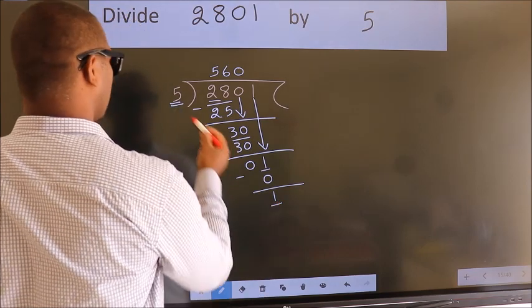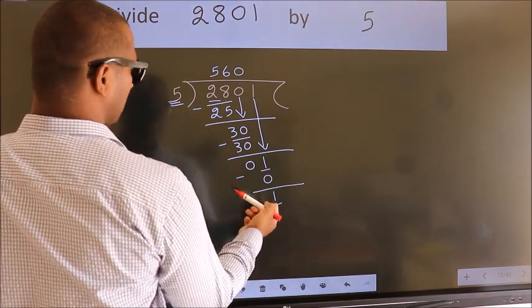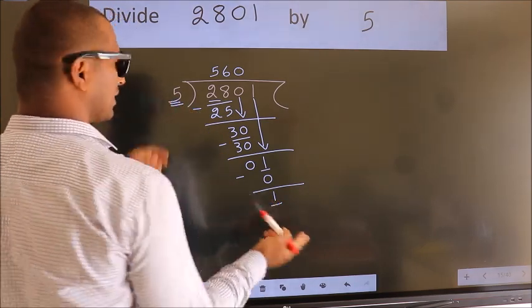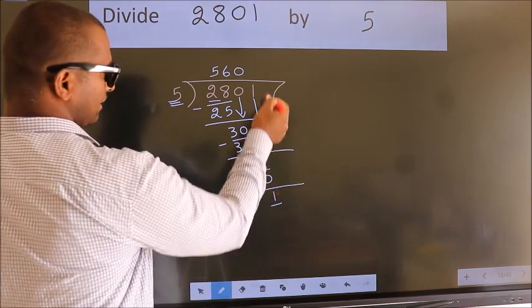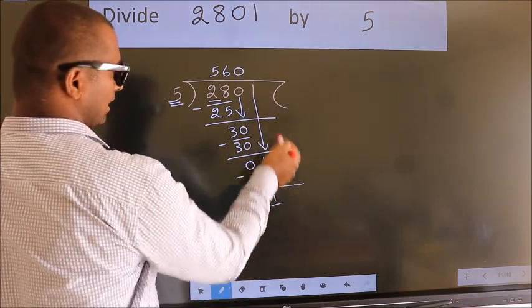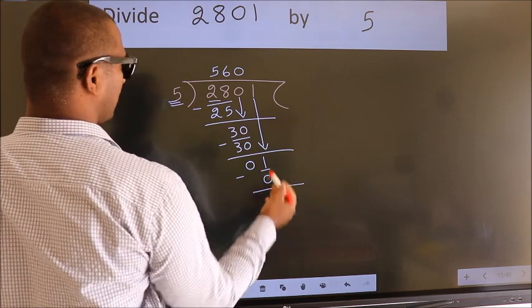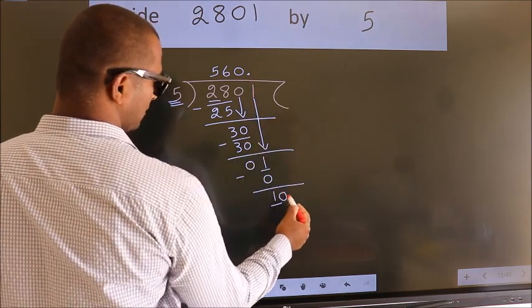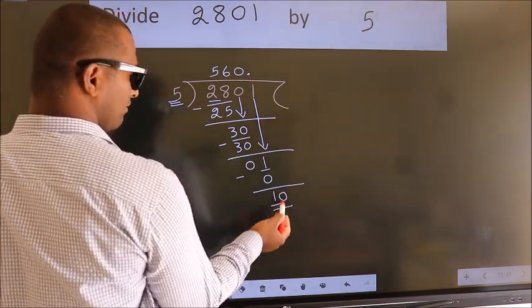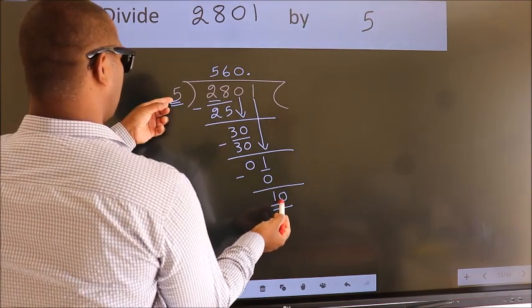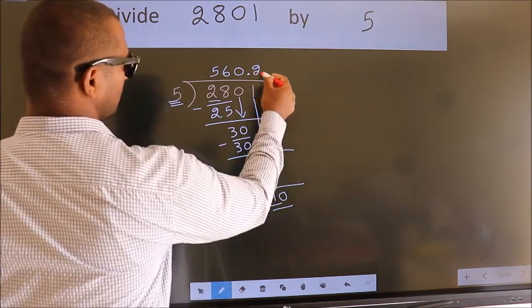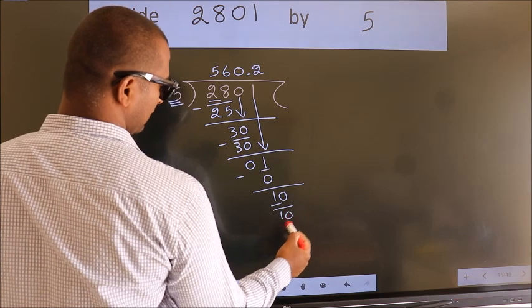Now we subtract, we get 1. Here we have 1, here 5. 1 smaller than 5, and we did not bring any number down. So now we can put dot take 0.